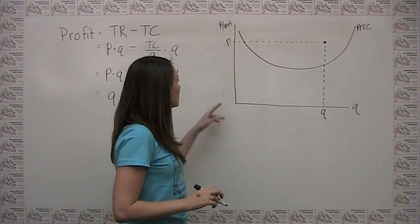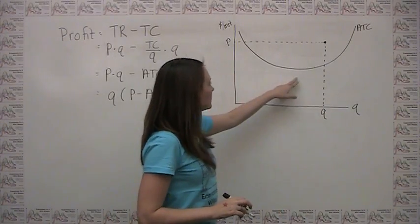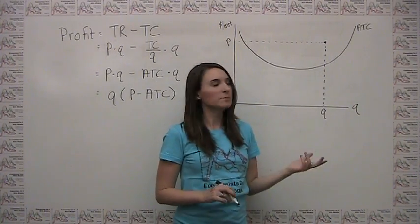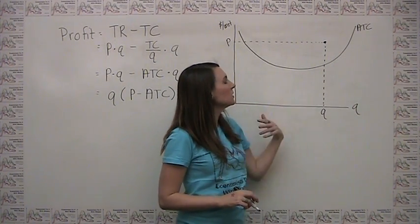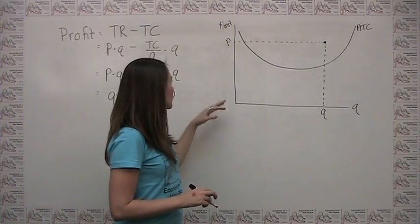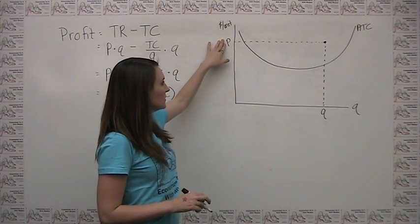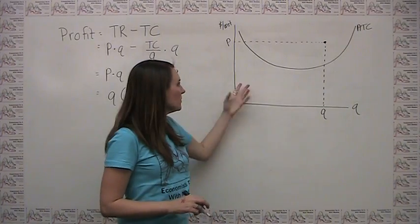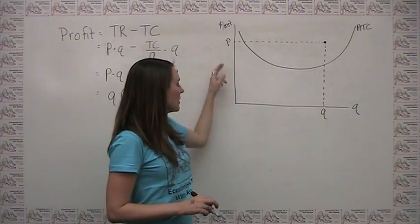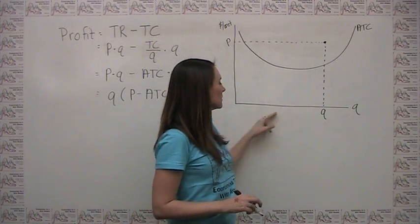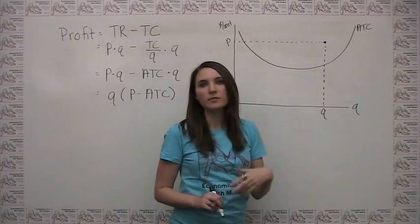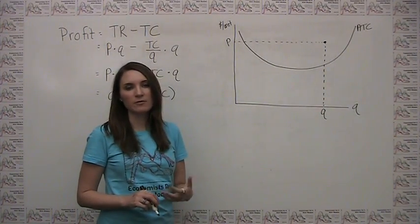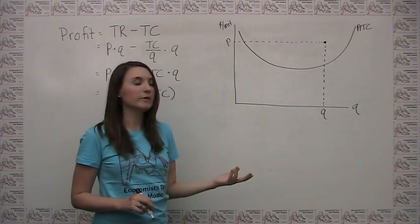As an example, let's say our average total cost curve looks like this — average total cost is usually U-shaped, so this makes sense. Let's say our company is producing at a certain price and quantity. We'll come back and talk specifically about how companies set price and quantity, but for now let's take it as given and show how to graphically represent the corresponding level of profit.